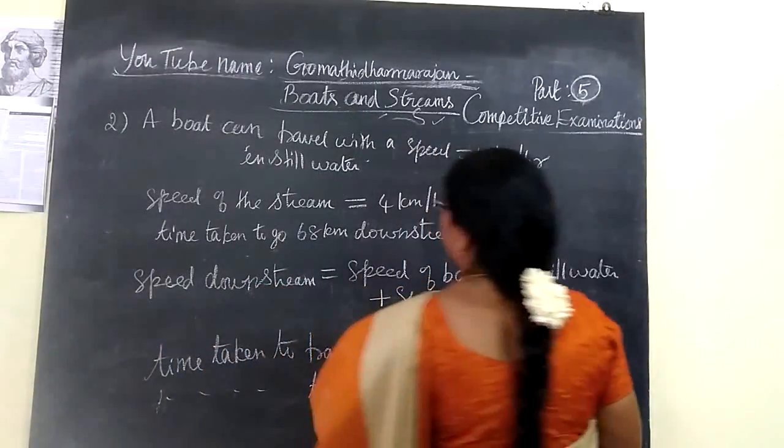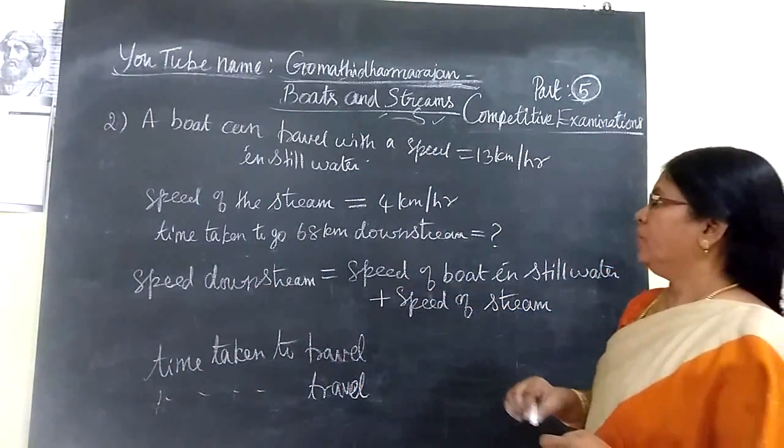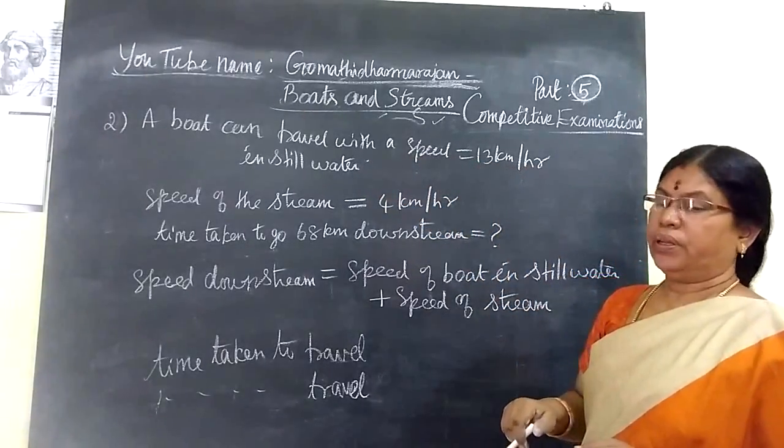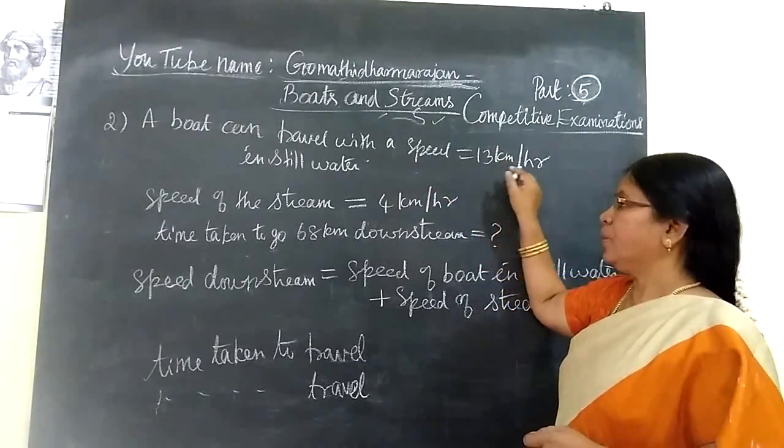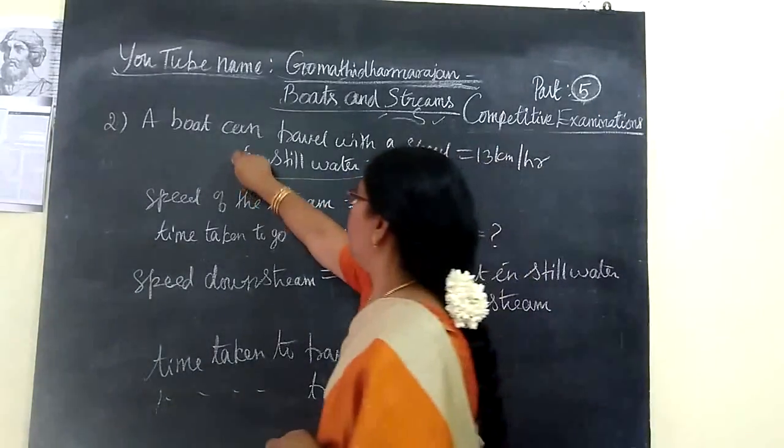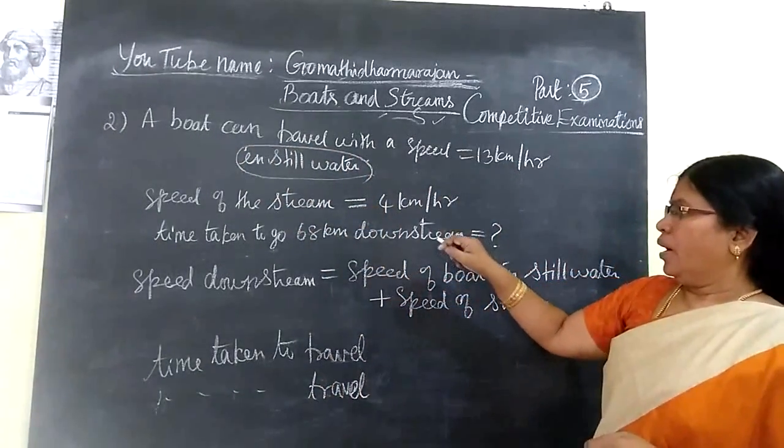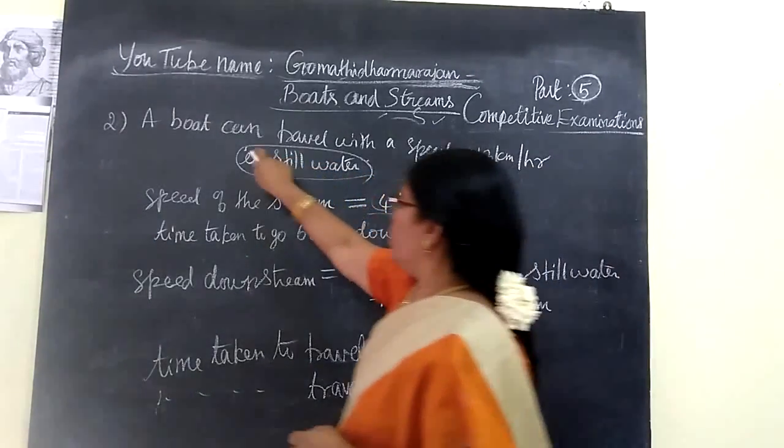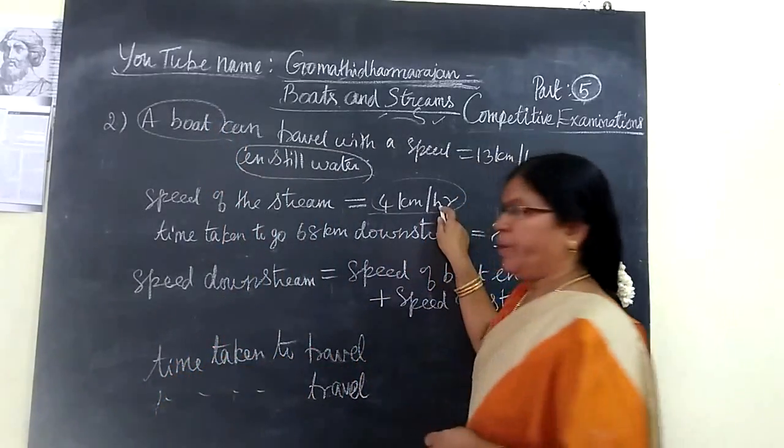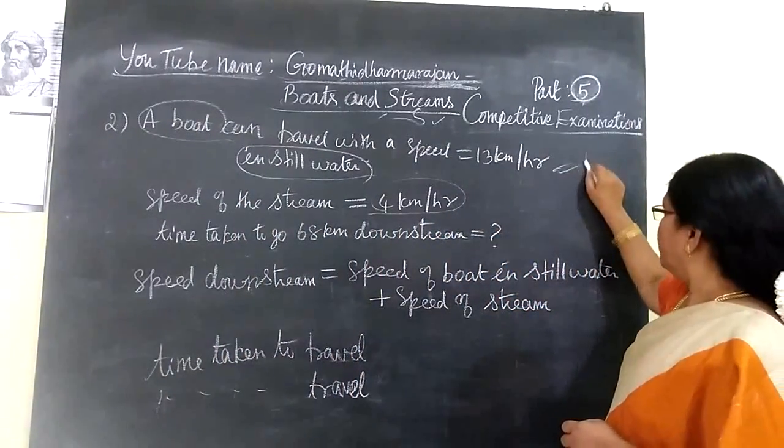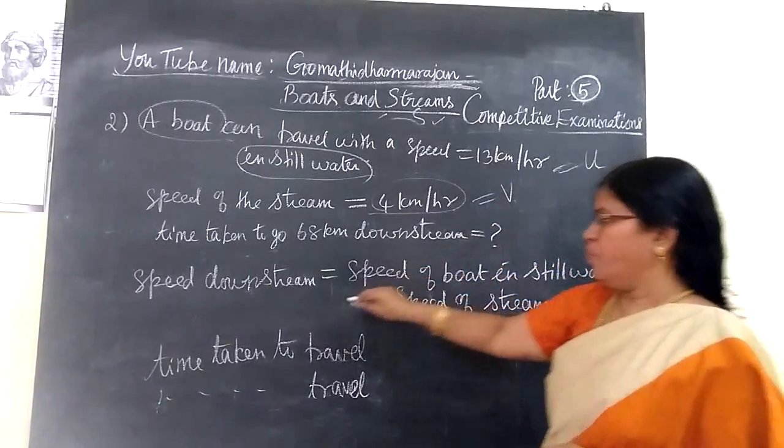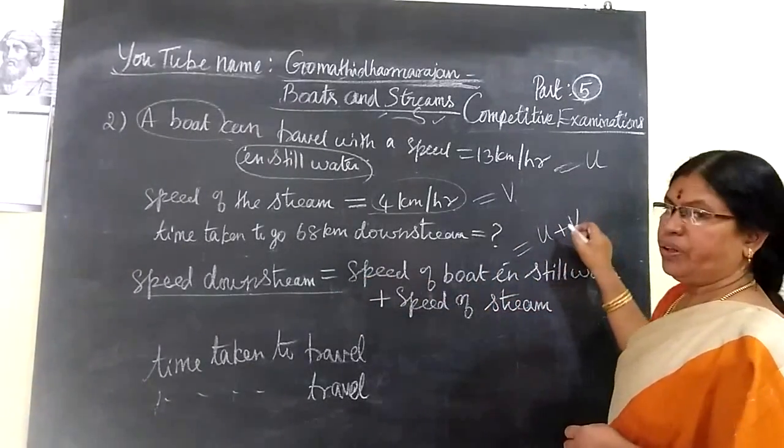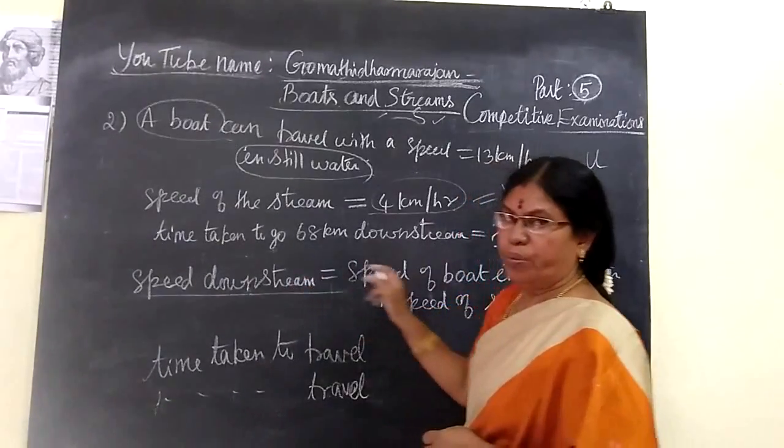Now we see the second question. A boat can travel with a speed of 13 km per hour in still water. The speed of the stream is 4 km per hour. We know the boat's speed downstream is U plus V, speed upstream is U minus V.